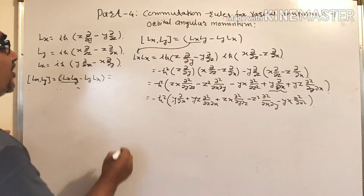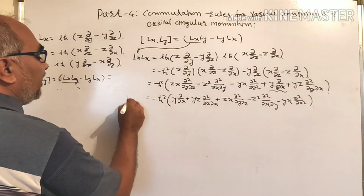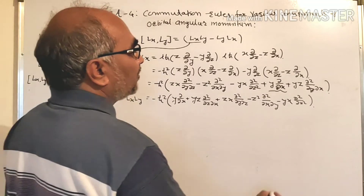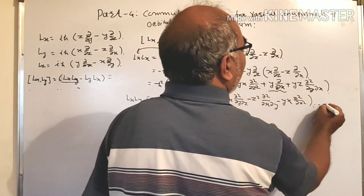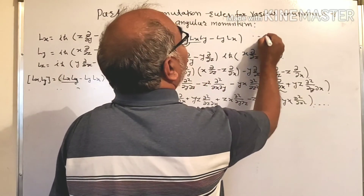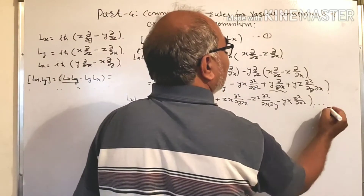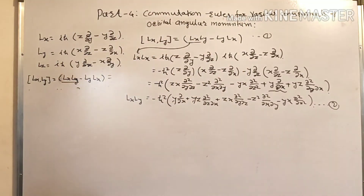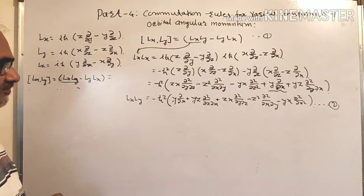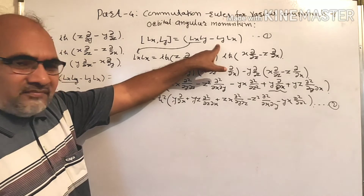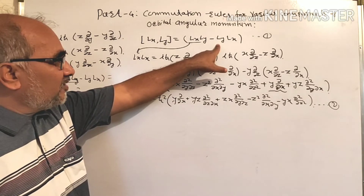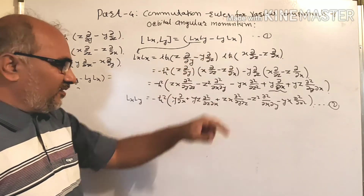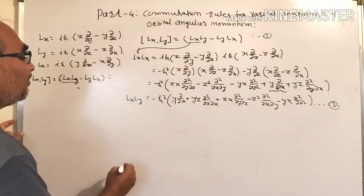So this is LxLy, say equation 1. This is equation 2. Now the second term: LyLx. Ly into Lx is equal to this term first.